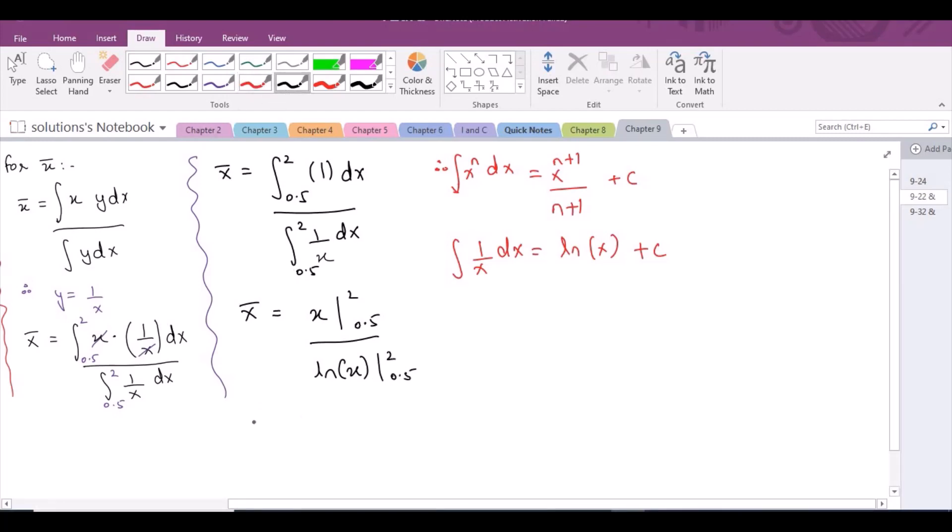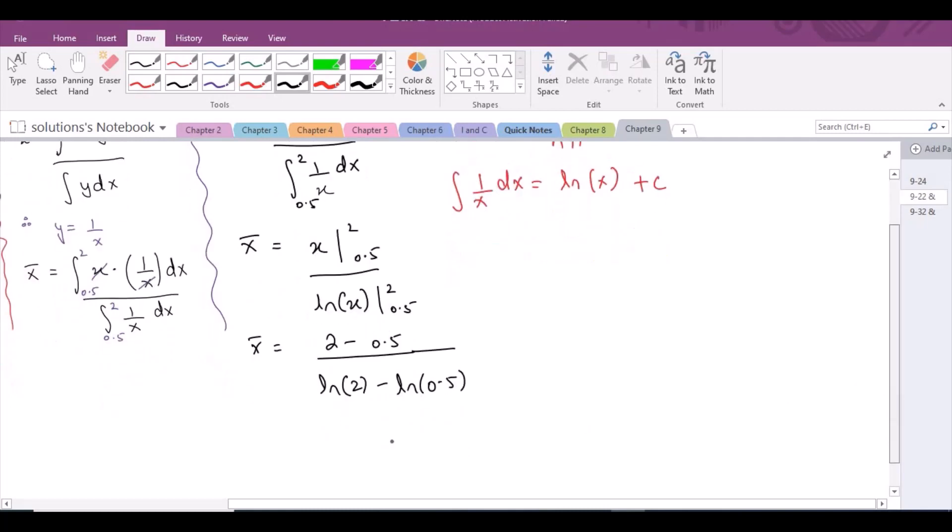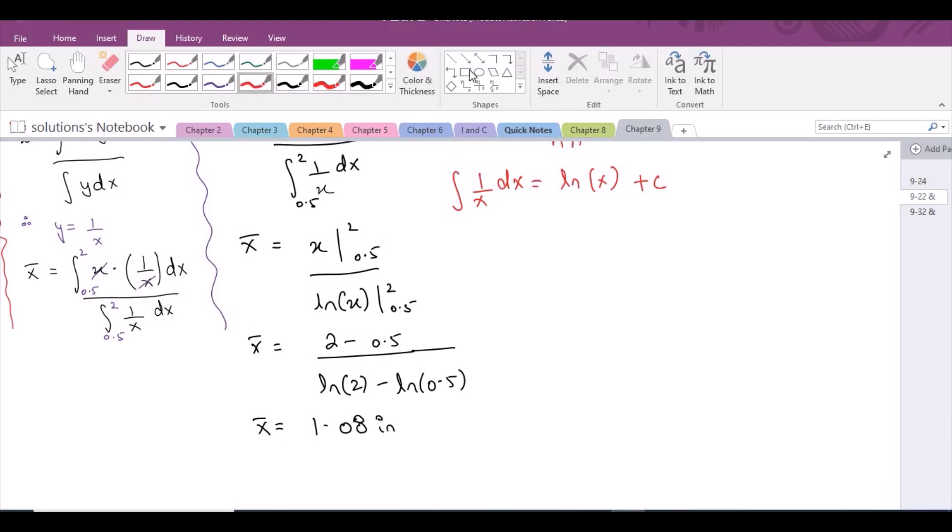And when we simplify it, x bar comes out to be 2 minus 0.5 divided by ln 2 minus ln 0.5. And from here, x bar becomes 1.08 inches. So this is our first answer.